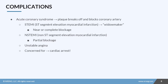The damage, plaque buildup, and blockage in the coronary artery supplying the heart can cause serious complications. If blood flow is cut off, the heart muscle starts to die — that's what a heart attack is. Acute coronary syndrome includes three conditions: STEMI, NSTEMI, and unstable angina. A STEMI involves ST segment elevation on the EKG and represents a near or complete blockage — it's known as the widowmaker because the patient is most likely to die.